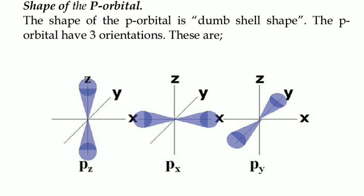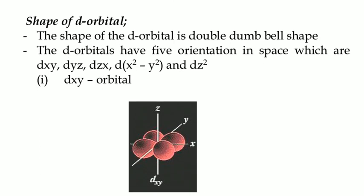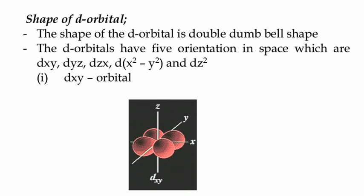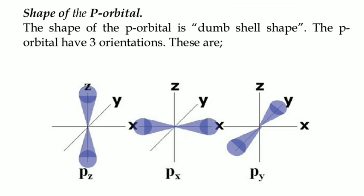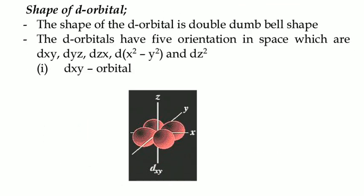You must know these and then D-orbital. The shape of D-orbital is double dumbbell. Here in the P-orbital, it is a dumbbell, not dumbbell shell. D-orbital is a double dumbbell shape.